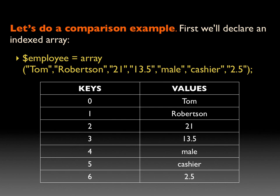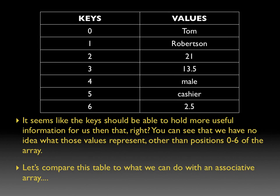You can see that the keys are really not very informative. It seems like they should be able to hold more useful information for us than that. You can see that we have no idea what those values represent other than positions 0 through 6 of the array. So let's compare this table to what we can do with an associative array.